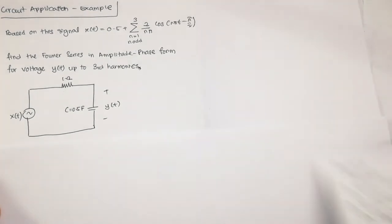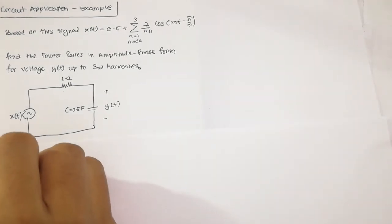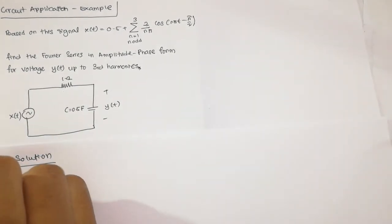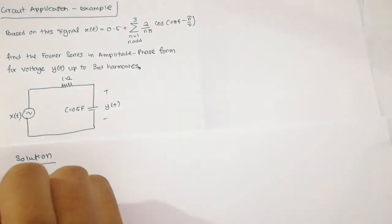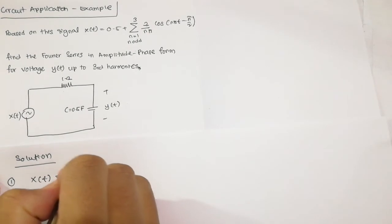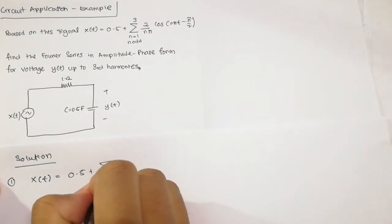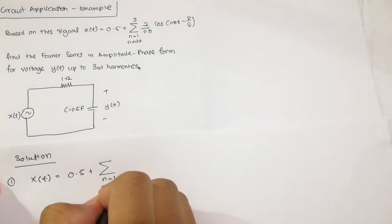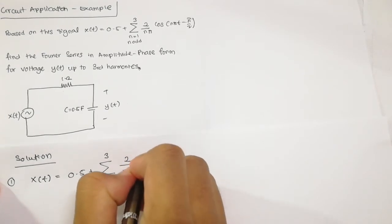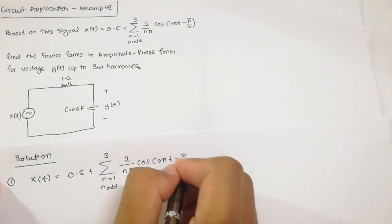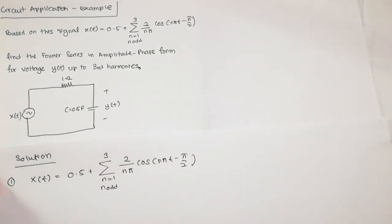We will do the first step where we need to convert our input into amplitude-phase form. So the input XT is given as: XT = 0.5 plus a summation from N=1, N odd, to 3, of (2 over N·pi) · cos(N·pi·t − pi/2). Since the input source is already in amplitude-phase form, we do not need to do anything and can proceed to step 2.